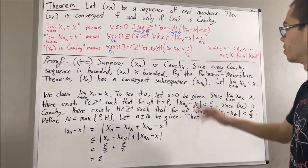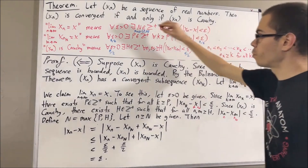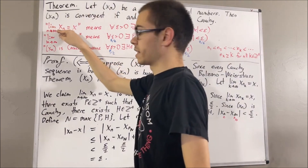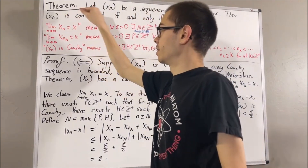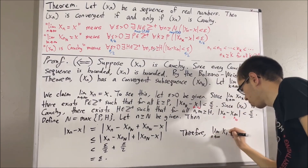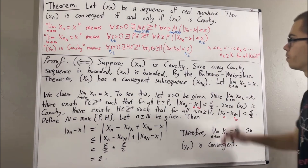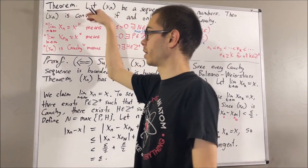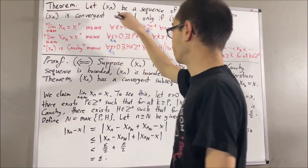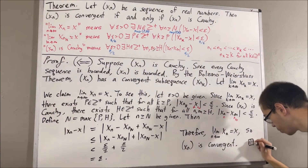So since both of these are less than epsilon over two, their sum must be less than epsilon over two plus epsilon over two, which equals epsilon. That shows this inequality is true. We have proven this statement, which proves xn converges to x, and therefore xn is convergent. So we have proven if xn is Cauchy, then xn is convergent. We have proven both directions of the if and only if, and so this completes the proof.